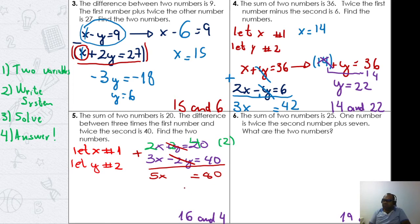Adding 2x plus 3x equals 5x. The y's are gone. 40 plus 40 equals 80. How many times does 5 go into 80? It's 16. So x equals 16, the first number.